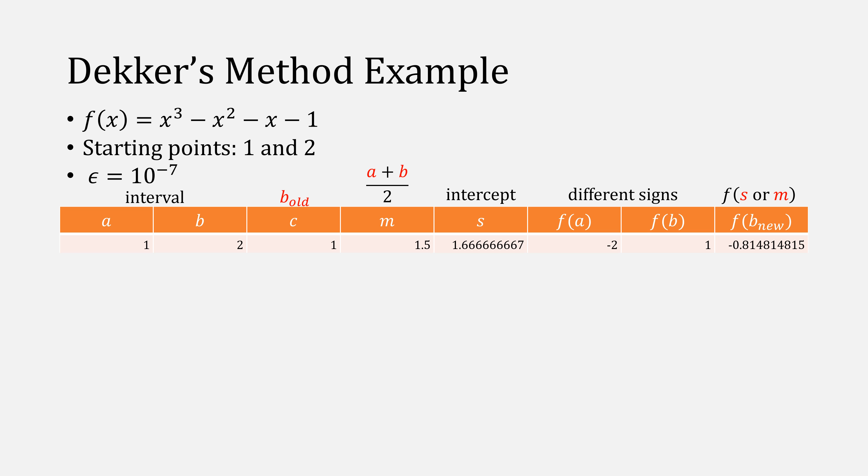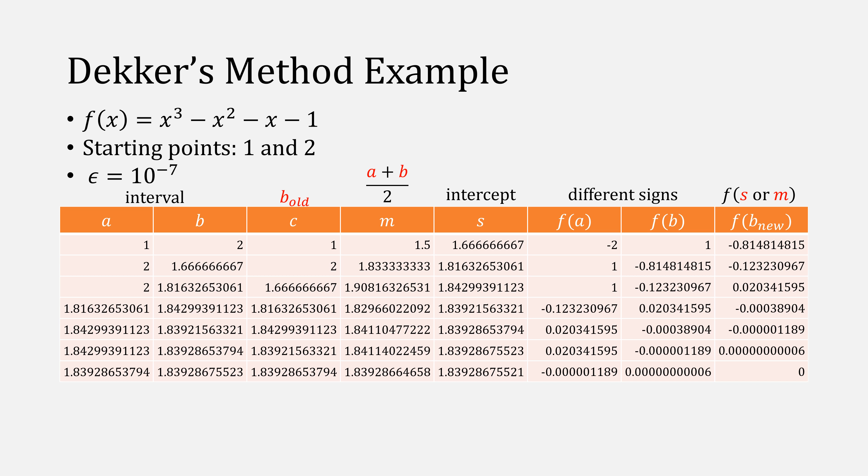Our new b is going to be either s or m, depending on our cases. After a few iterations, b minus a is less than some epsilon, in this case 10 to the minus 7, in absolute value. Therefore, our last b is our final answer.